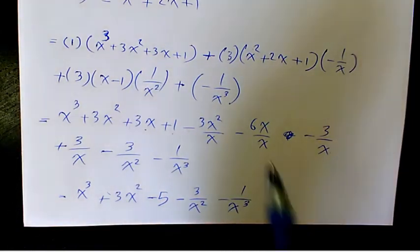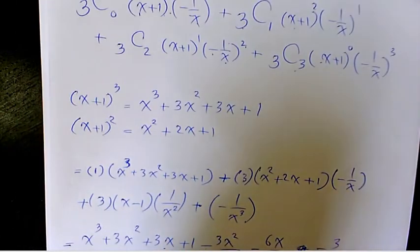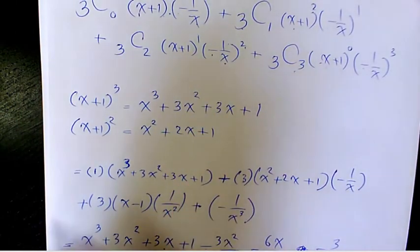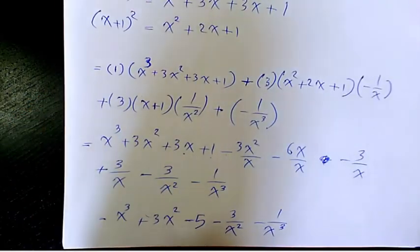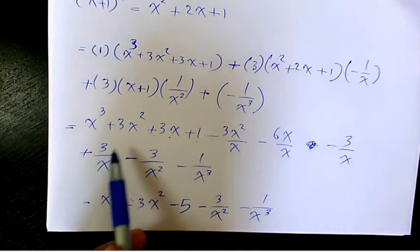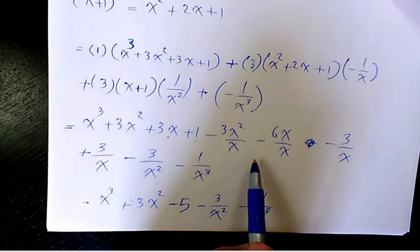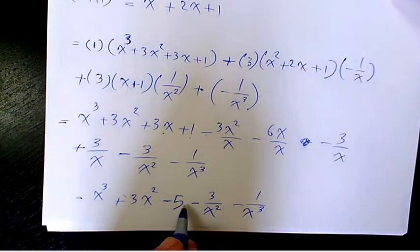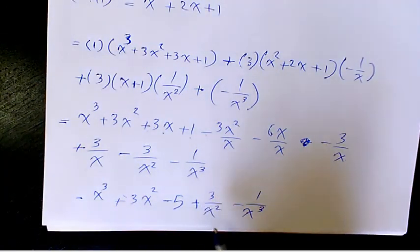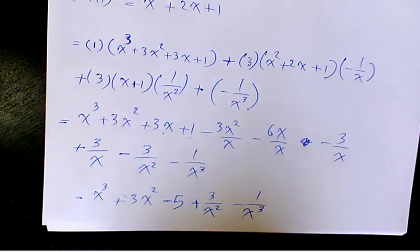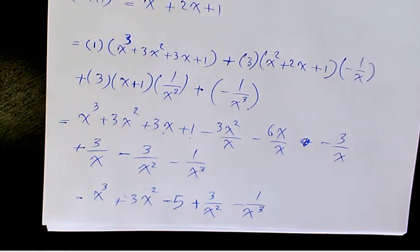There's a typo here — I need to change a minus to a plus. So that's positive 3/x² minus 1/x³. The final answer is: x³ + 3x² - 5 + 3/x² - 1/x³. I hope you enjoyed this video — please leave me a comment if you have any questions. Thank you for watching and have a great day.